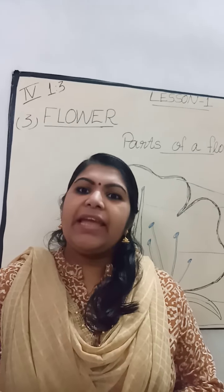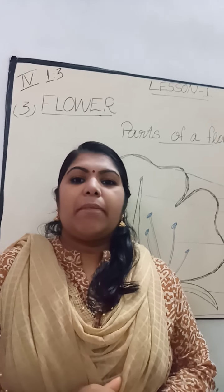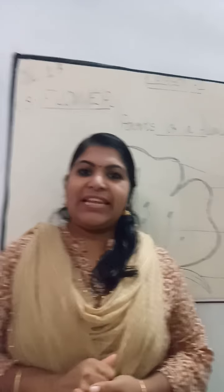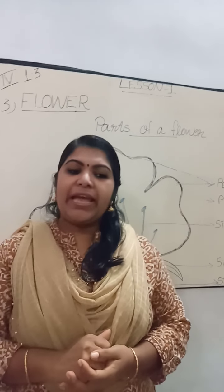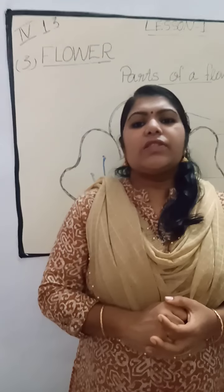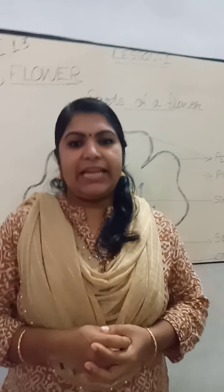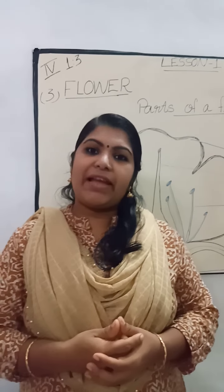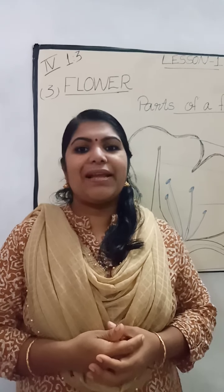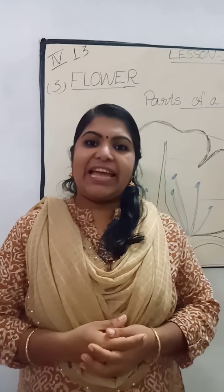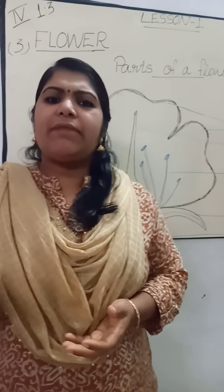So today we will discuss about the part of a plant that is the flower. Flowers are objects of aesthetic, ornamental, religious and cultural values. They are also symbols of conveying human feelings like love, affection, sorrow, etc. Flowers are varying in their color, shape and size. So let us check about the different types of flower.